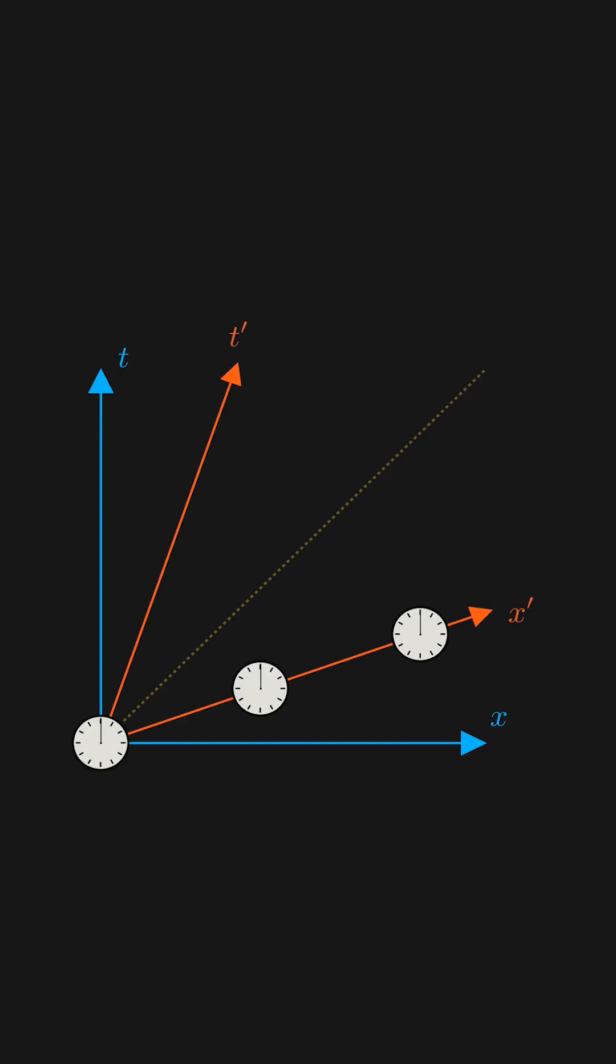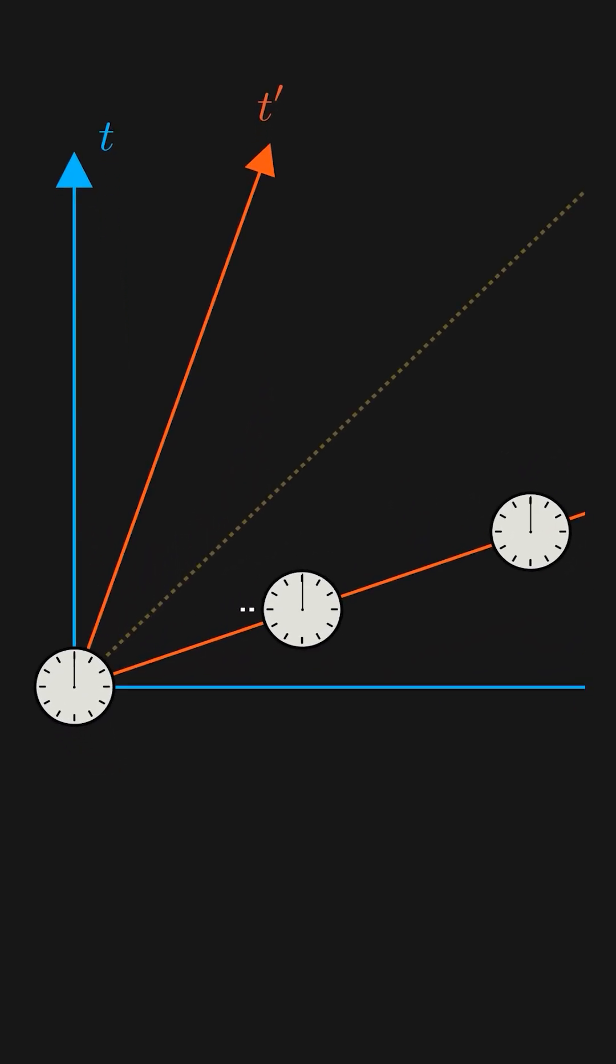These three clocks are on the x' axis, meaning they would be synchronized at t' equals zero in the moving frame. If we project them onto the t-axis, though, we can see that they're clearly not synchronized in the ground frame.